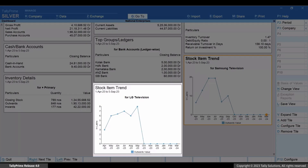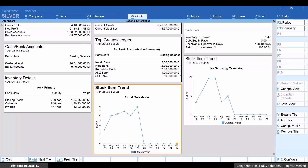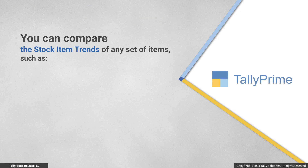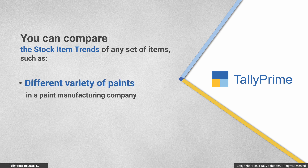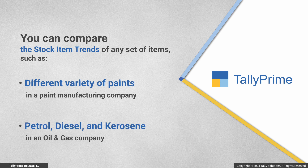You can view both tiles and compare their stock item trends. Similarly, you might be working in a different industry and want to compare stock item trends. For instance, your business could be in the paint industry with stock items for different varieties of paints, or in the oil and gas industry with stock items such as petrol, diesel, and kerosene. You can easily compare the stock item trends of various stock items.